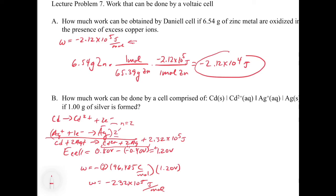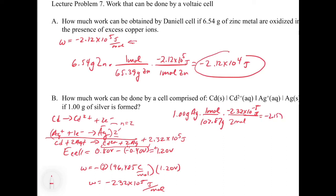To find the work for 1.00 gram of silver formed, we convert using the molar mass of silver (107.87 g/mol) and the stoichiometry of 2 moles of silver per one reaction turnover: 1.00 g Ag × (1 mol / 107.87 g) × (−2.32 × 10⁵ J / 2 mol Ag) = −2.15 × 10³ joules. This is the final answer. The key point is that work is linked to the stoichiometry of the reaction, just like ΔH.